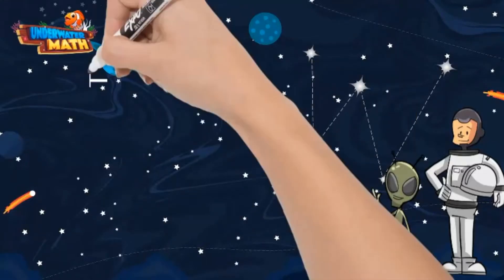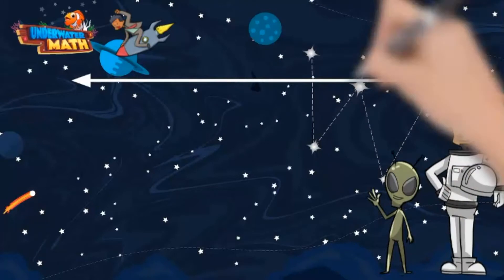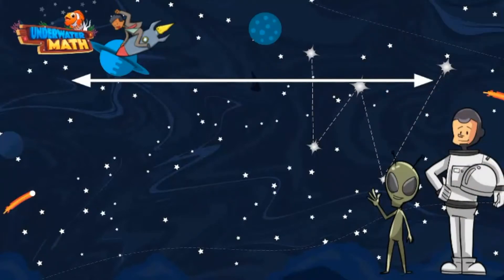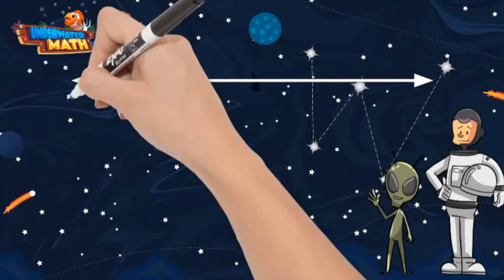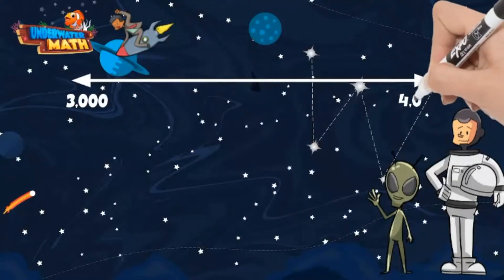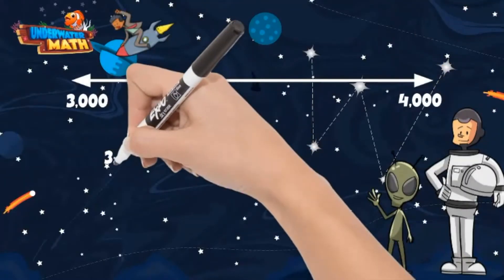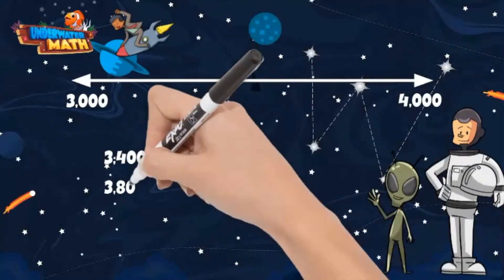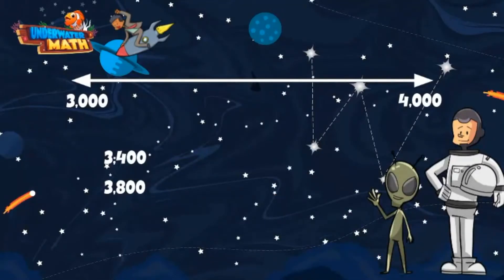But what if the numbers both start in the same place value? Great question. Let's try using a number line to help us out. On this end of the number line we have 3000 and 4000 at the other end. Our two numbers are 3400 and 3800. We need to put these two numbers on our number line to determine how to compare them.